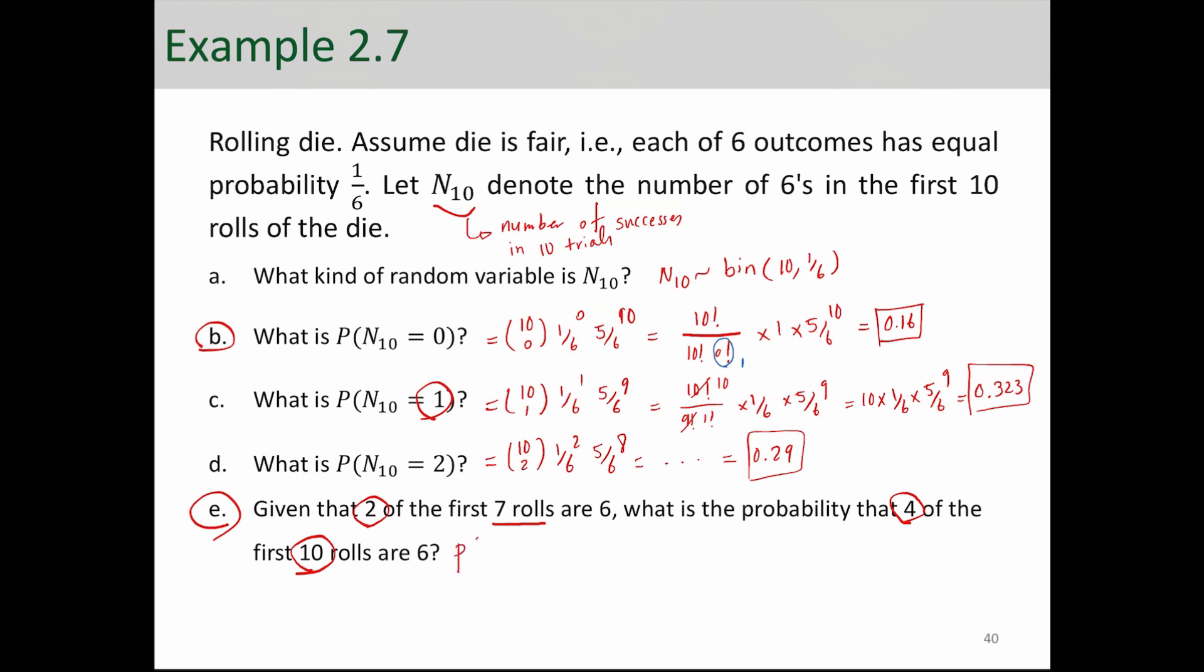If we want to write this down in a more mathematical statistical way, we want to calculate probability of n10 equals to 4, right, given that n7 is equal to 2. And n7 equals to 2 comes from this part. So if you have tried 7 trials, so we have 3 more trials left, right? We already got 2 successes. We need 2 more successes in the next 3 trials.